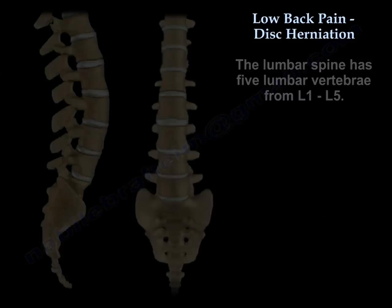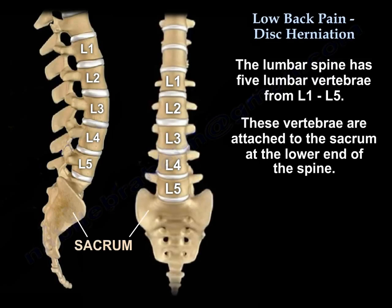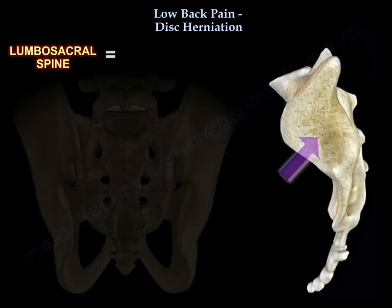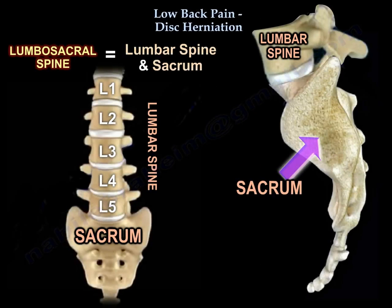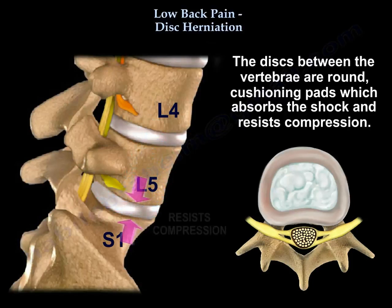The lumbar spine has five lumbar vertebrae from L1 to L5. As you can see, these are the five vertebrae and they are numbered. These vertebrae are attached to the sacrum at the lower end of the spine. When we say the lumbosacral spine, it is the junction between the lumbar spine and the sacrum — between L5 and the sacrum, which is the tailbone. The discs between the vertebrae are round cushioning pads which absorb shock and resist compression.